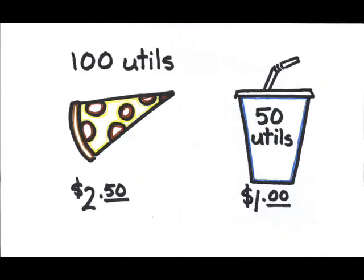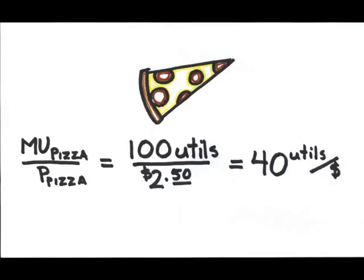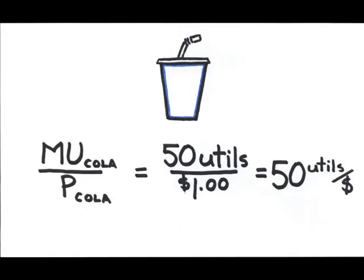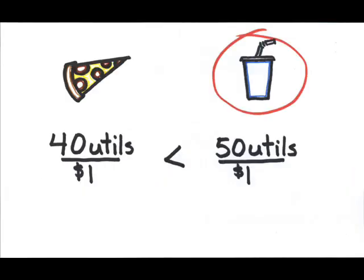So, which product yields greater added satisfaction per dollar? If you take a look at the pizza, the marginal utility over the price is 100 utils, or units of satisfaction, divided by $2.50. The pizza yields 40 units of utility per dollar. The Coke gives 50 units of utility and costs a dollar, so it yields 50 units of utility per dollar. Coke wins this one.